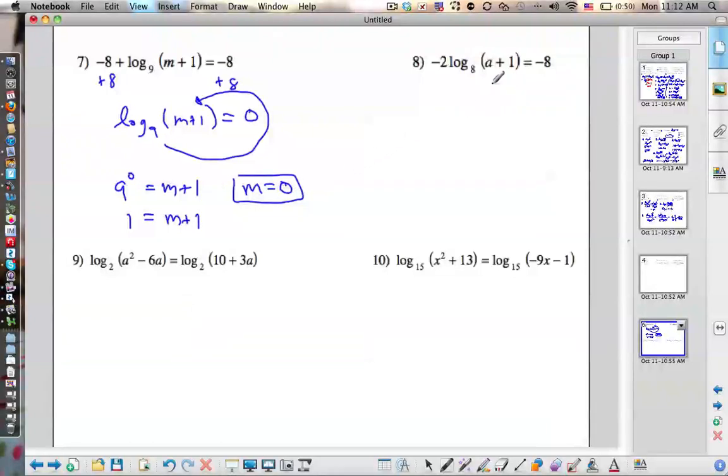Okay, what should I do here? Now we could do it two ways. Let's divide by minus 2 to begin with. Divide by minus 2 both sides. So we have log base 8 of a plus 1 is equal to 4.